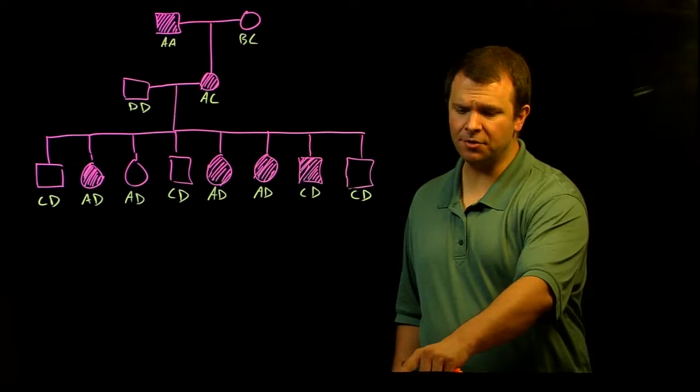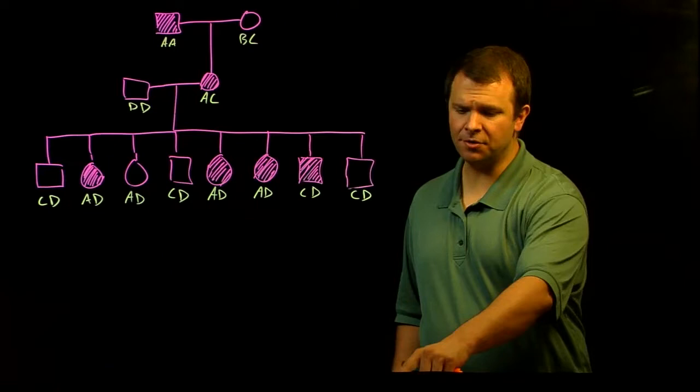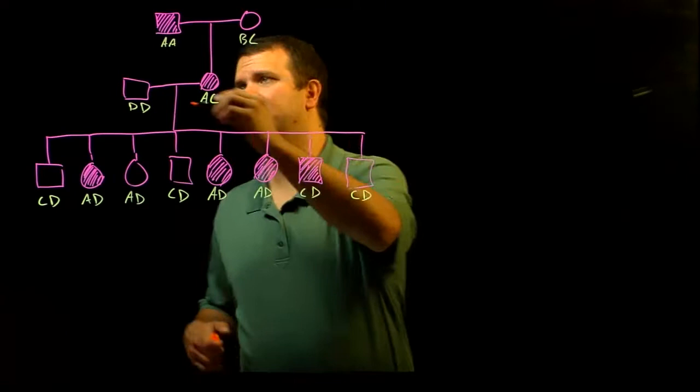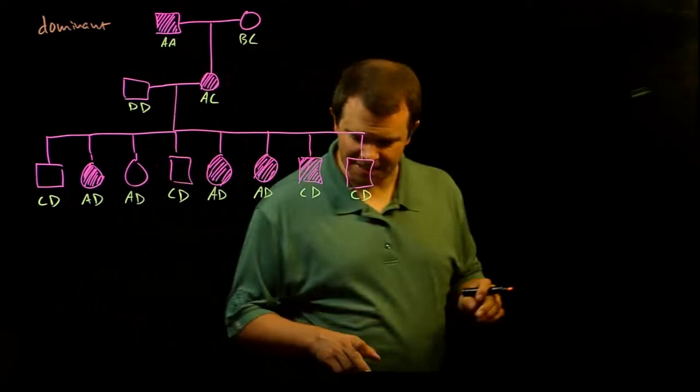The first is to use pedigrees to infer linkage. So, consider this pedigree for a dominant disease-causing gene, such as Huntington's disease, for example.